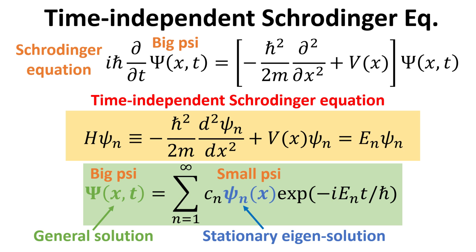In this video, we learn the general framework of how to solve for the wave functions for these cases. We show that the general solution of the time-dependent Schrödinger equation can be obtained just by solving the time-independent Schrödinger equation given in the yellow box. The eigensolutions to this time-independent Schrödinger equation are denoted by small psi, and the general solution to the time-dependent equation can be expressed in terms of these time-independent eigensolutions, as given in the green box.